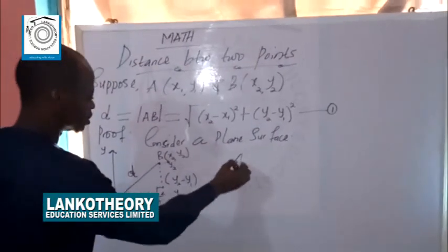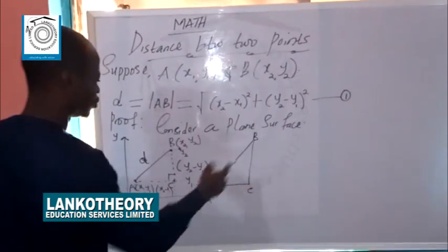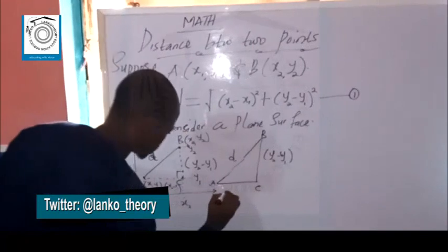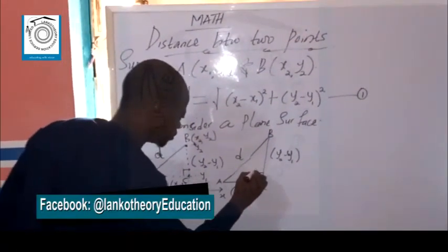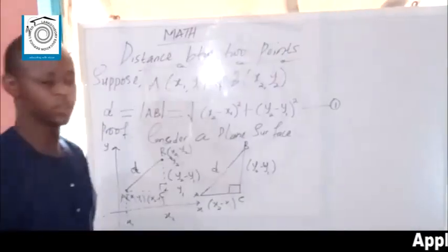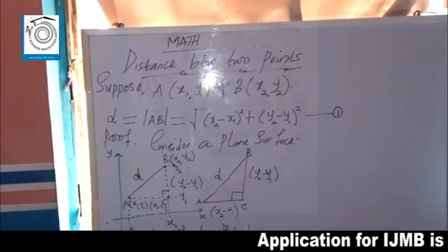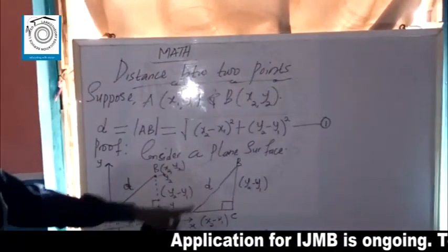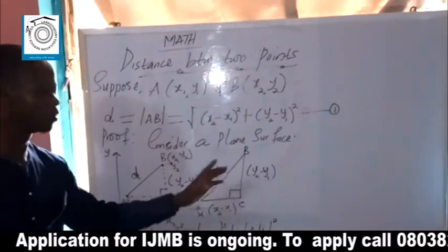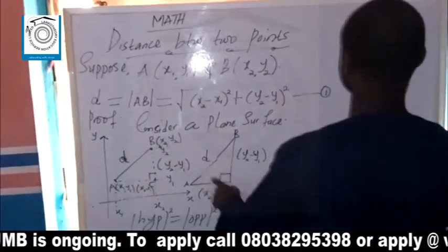If we remove the right-angle triangle from that diagram, we observe that angle C is 90 degrees. So Pythagoras' theorem is applicable: the square of the hypotenuse equals the sum of the squares of the two other sides. The hypotenuse here is D, so D² = (y2 − y1)² + (x2 − x1)².